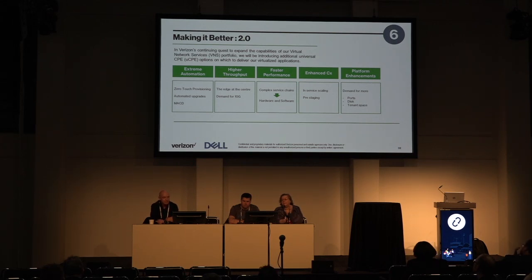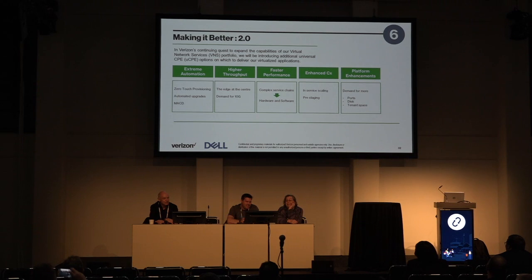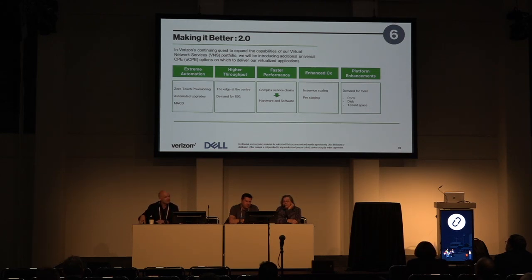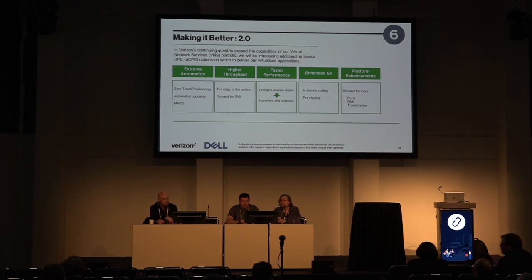Higher throughput — believe it or not, customers now want 10 gig in virtual environments out at the edge. We've launched products scaling to about one to one-and-a-half gig, but they want more. They want 10 gig on a two-core Atom — which is completely unrealistic. But also the concept of edge at the center: enterprises want to take these edge platforms and put them in the data center. They want to centralize their firewalls — for example, 40 stores on one firewall — which saves a lot of money but is a challenge for us.